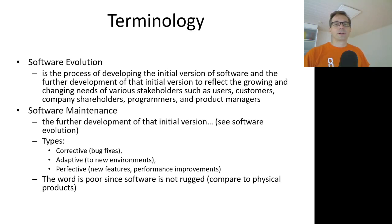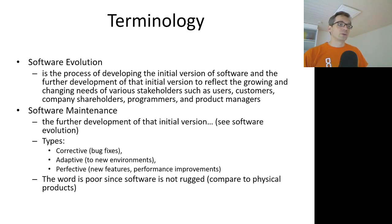Let's start out with some terminology. Software evolution is the process of developing the initial version of software and the further development of that initial version, reflecting the growing and changing needs of various stakeholders such as users, customers, company shareholders, and programmers.